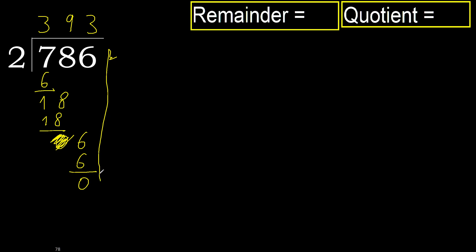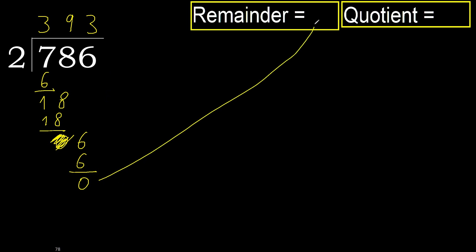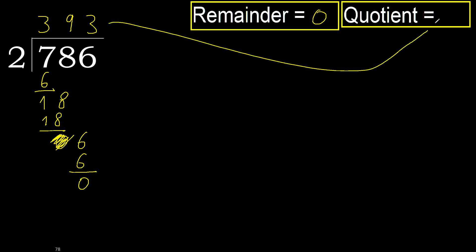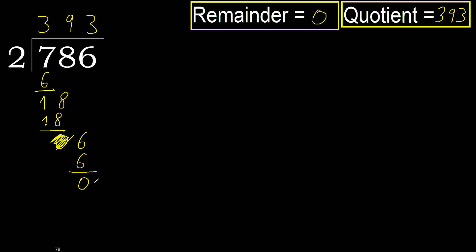There is no number, therefore finish it. Ok, 0 — therefore 786 divided by 2 is here.